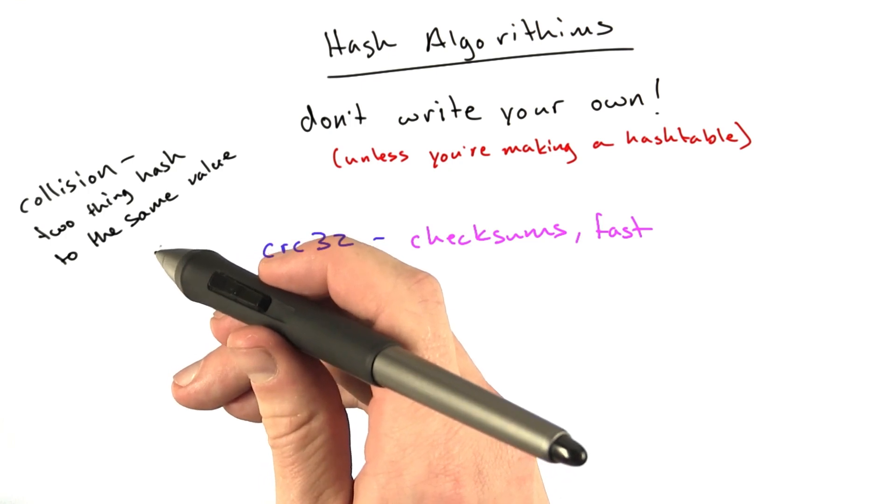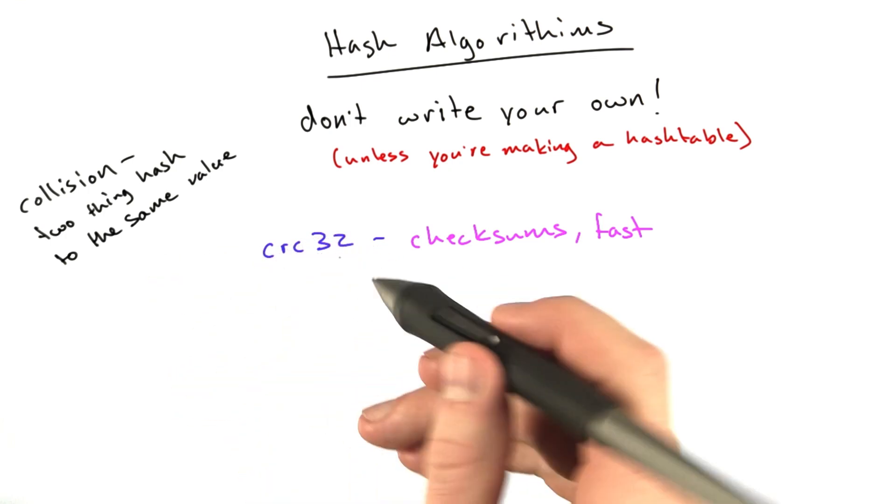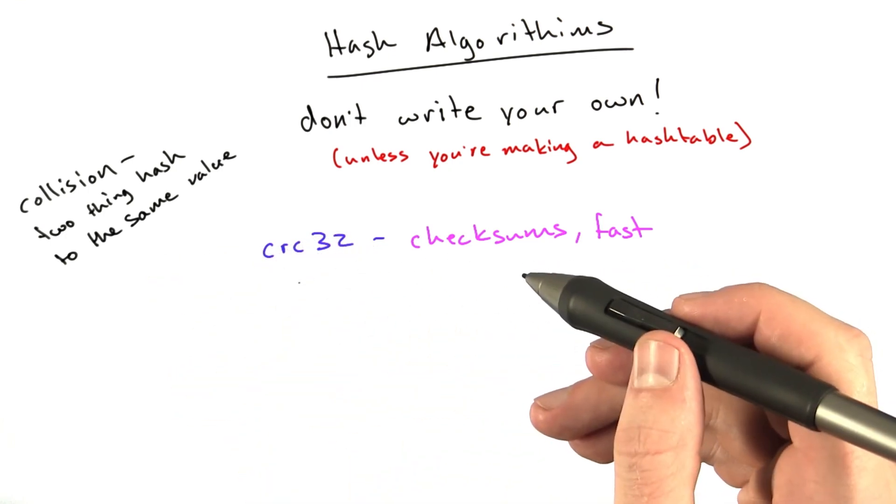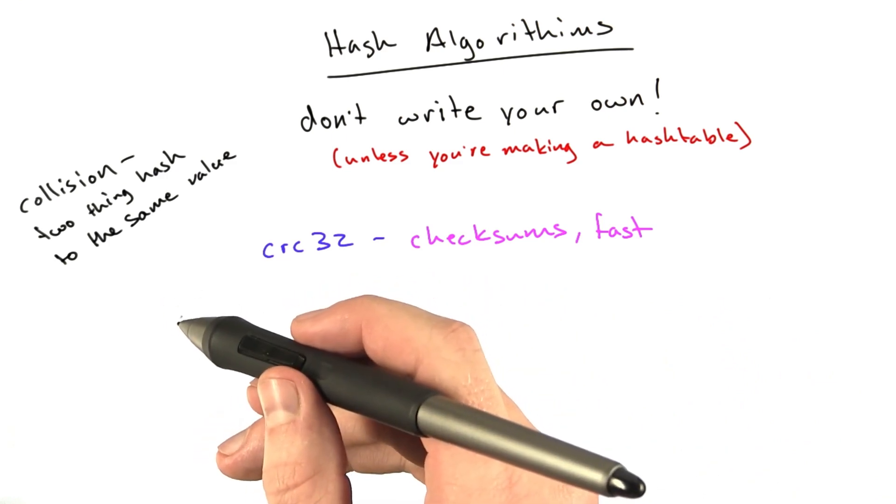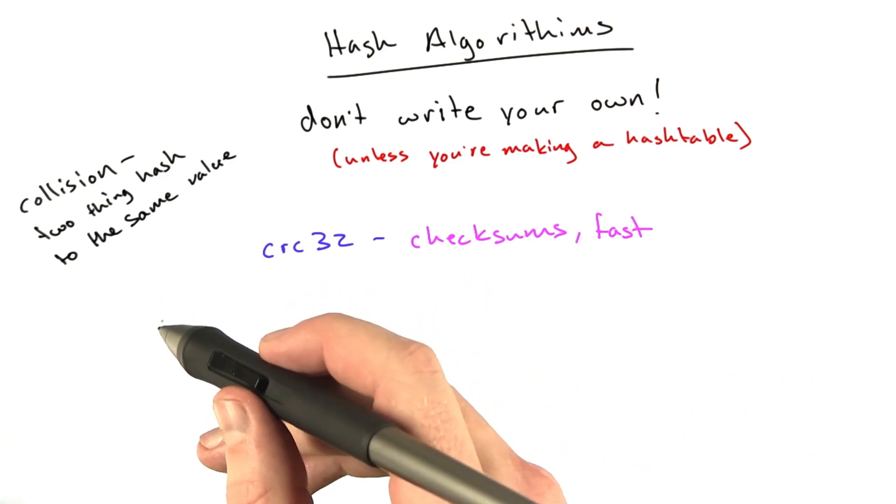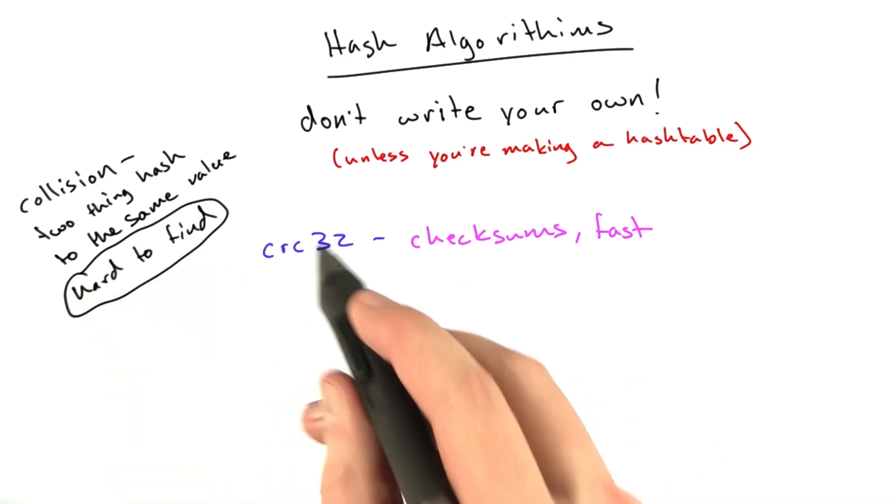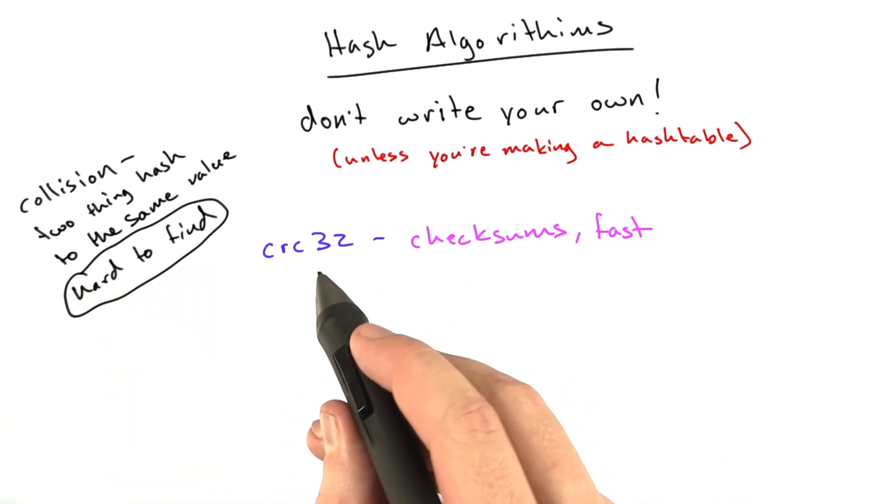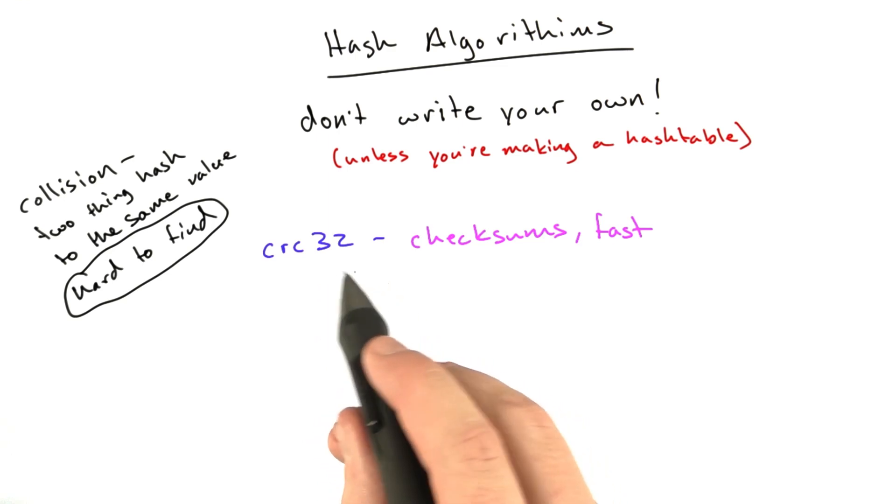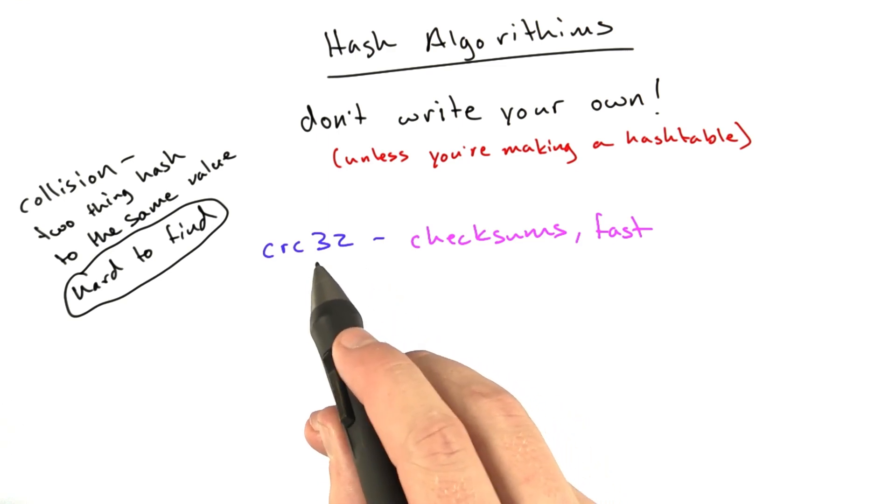Obviously, if the size of the input is substantially greater than the size of the output, there are going to be collisions. The whole point is that it's hard to find them, and with CRC32, it's very easy to find them. The reason you'd use CRC is because you don't care about collisions. You just care about speed, and CRC is very fast.